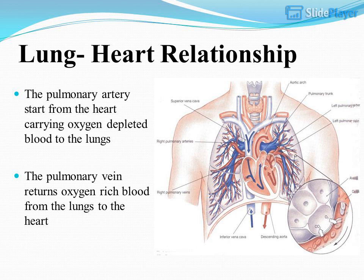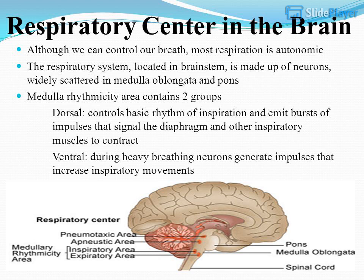Lung-heart relationship: the pulmonary arteries start from the heart carrying oxygen-depleted blood to the lungs. The pulmonary vein returns oxygen-rich blood from the lungs to the heart. Respiratory center in the brain: although we can control our breath, most respiration is autonomic. The respiratory system, located in the brainstem, is made up of neurons widely scattered in the medulla oblongata and pons. The medulla rhythmicity area contains two groups: dorsal, which controls the basic rhythm of inspiration and emits bursts of impulses that signal the diaphragm and other inspiratory muscles to contract; and ventral, which during heavy breathing generates impulses that increase inspiratory movements.